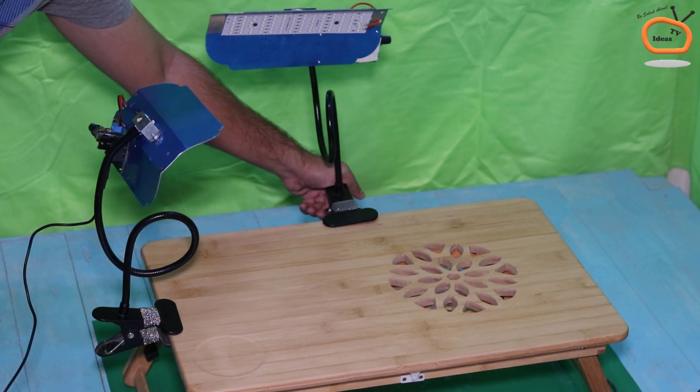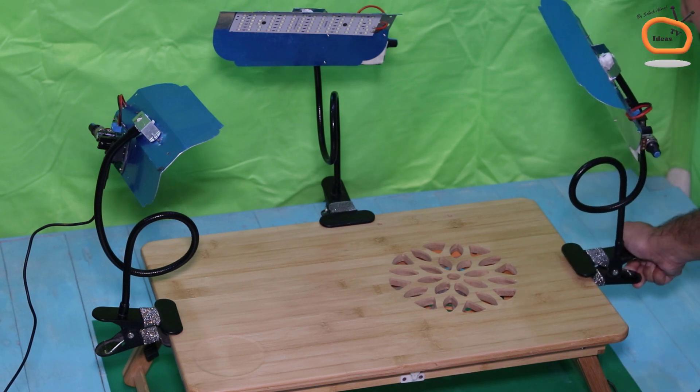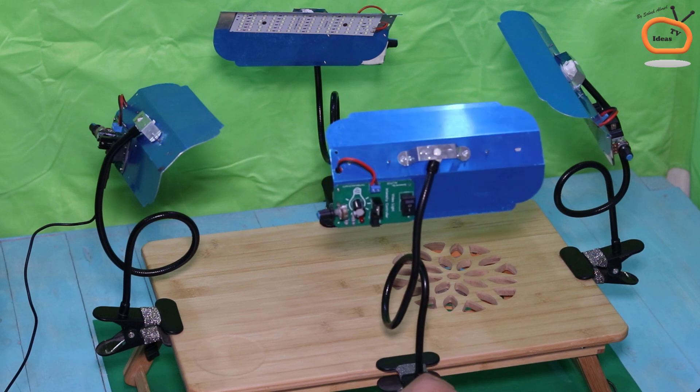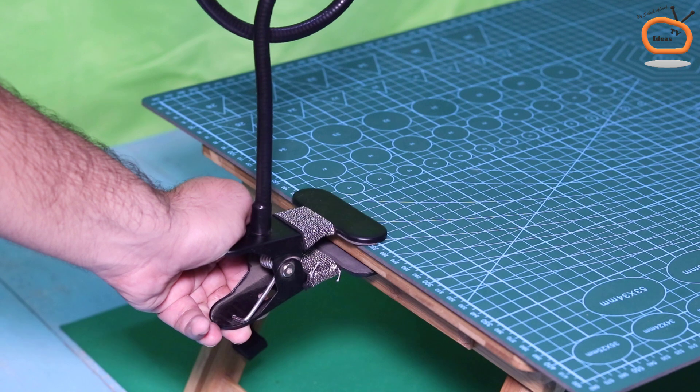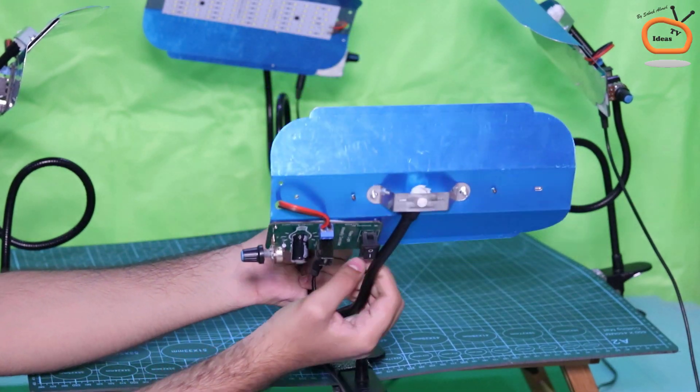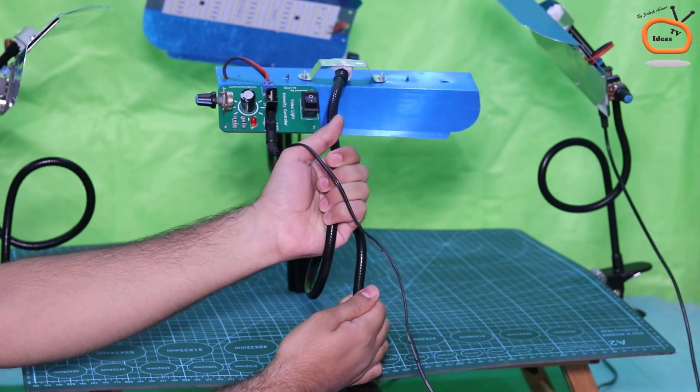So, I made three more intensity control video lights by following the same process that is shown in the video. The clip in the bottom of tripod makes it more convenient to attach the video light with the work table, and the snake shaped flexible wire makes it really easy to adjust the direction of the video light.